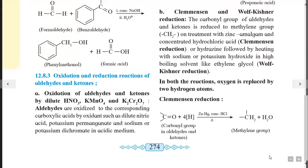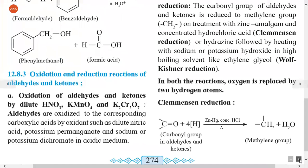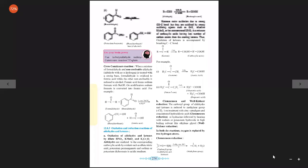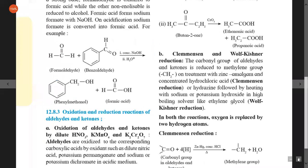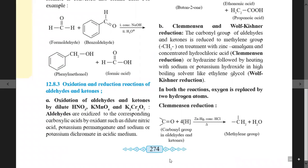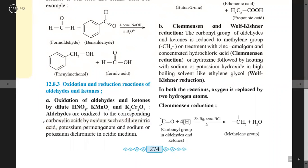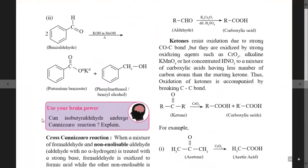The first reaction type is oxidation of aldehydes and ketones using dilute nitric acid (dilute HNO3), KMnO4, and K2Cr2O7. Aldehydes are oxidized to the corresponding carboxylic acids, which have the general formula RCOOH. Oxidants such as dilute nitric acid, potassium permanganate, and potassium dichromate in acidic medium are used as oxidizing agents.